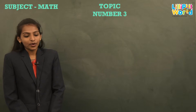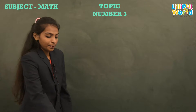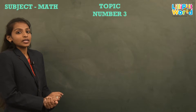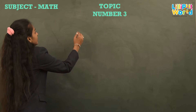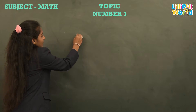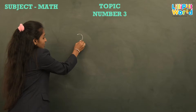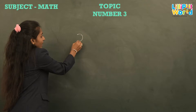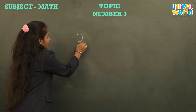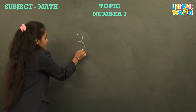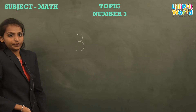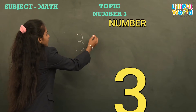Now come on, let's learn how you will write number 3. Come on, let's see. So the first thing you have to do is: first make a curve — a small curve — right, then again a small curve. So this is the number 3.